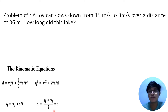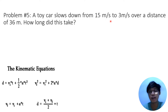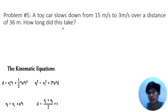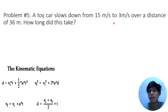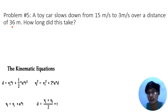Now let's answer problem number 5. A toy car slows down from 15 meters per second to 3 meters per second over a distance of 36 meters. How long did this take? We want to know how long the toy car took to slow down to 3 meters per second over a distance of 36 meters.